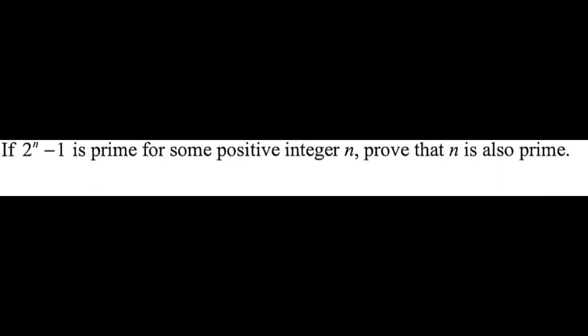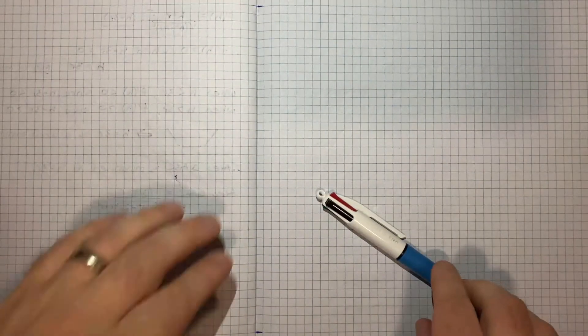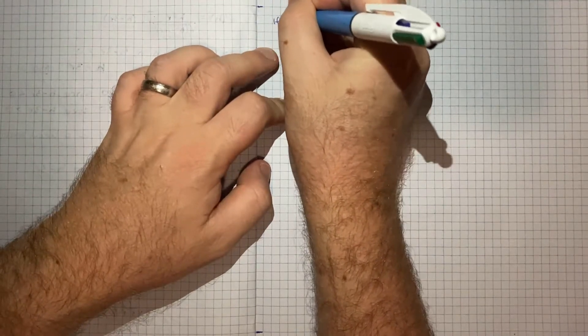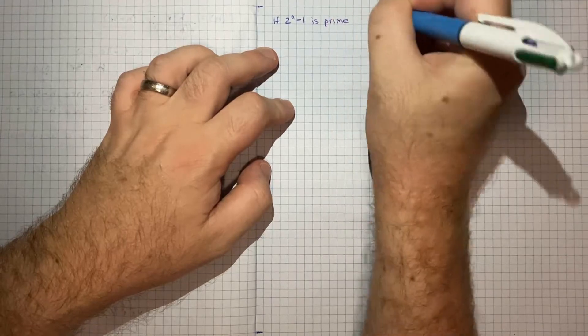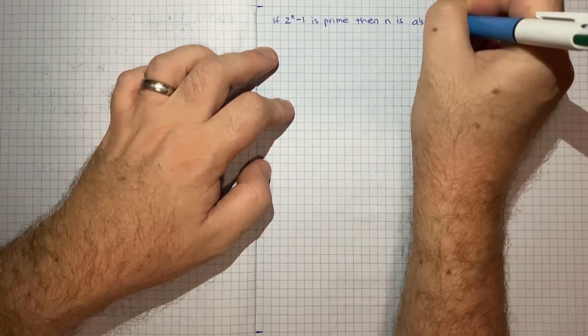Hello, and thanks for using TickBoom. For this question we're being asked to show that if 2 to the n minus 1 is prime for some positive integer n, prove that n is also prime. So I'll just write that out. We're trying to show that if 2 to the n minus 1 is prime, then n is also prime.